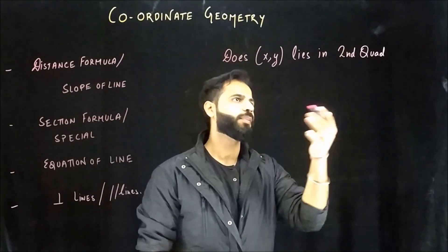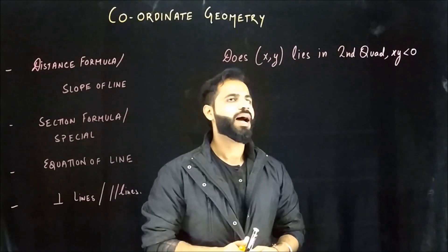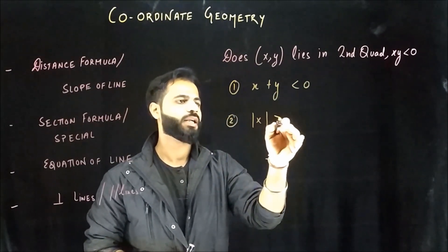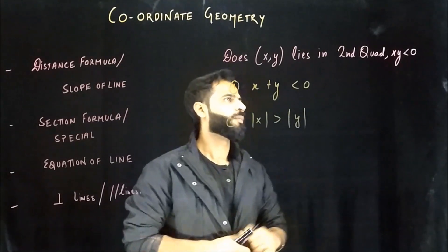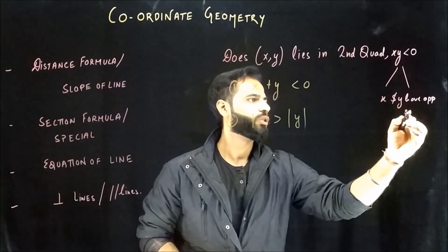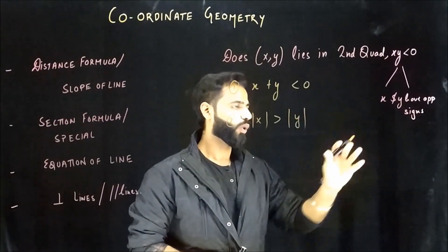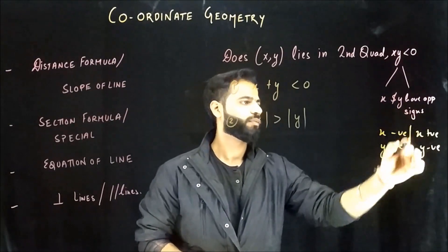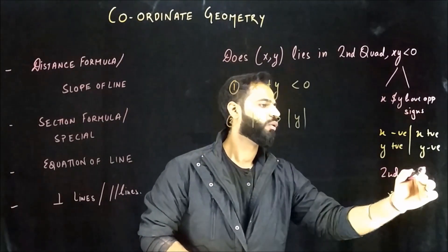Let's see the variation to the same question — now the question itself adds that x times y is less than zero. Statement 1 is the same: x plus y is less than zero. Statement 2 is the same: mod x is greater than mod y. x times y less than zero tells us that x and y have opposite signs — x can be negative and y positive, or x positive and y negative. So first and third quadrants are already out; we're left with second or fourth quadrant.